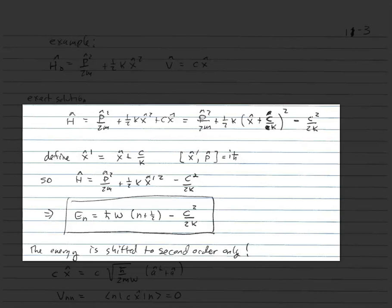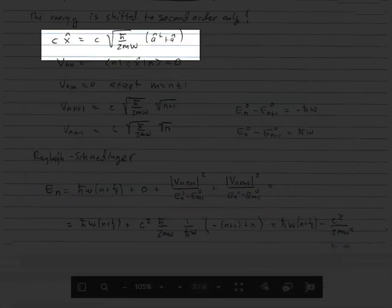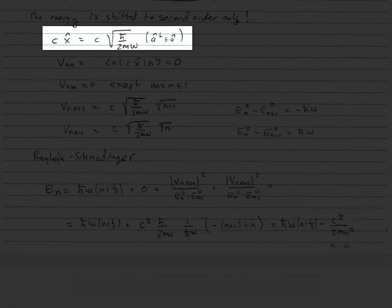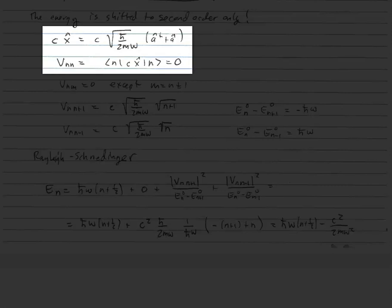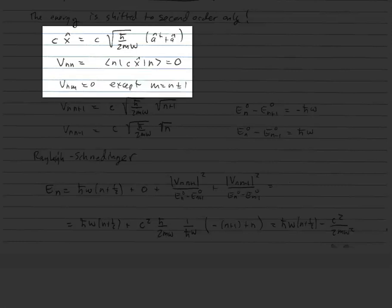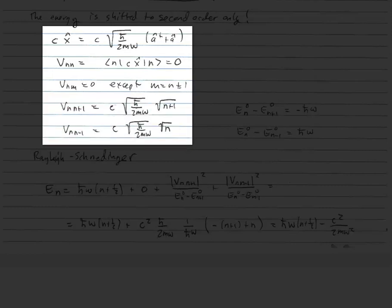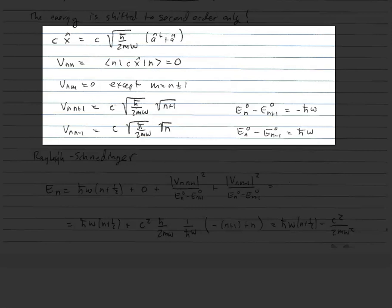We're going to work with this as a perturbation series. We write CX̂ = C√(ℏ/2Mω) (a† + a). Calculating VNN — the expectation value of CX̂ — because we have unbalanced a and a† operators, that expectation value equals 0. In fact, VNM = 0 except when M = N ± 1. The matrix elements are C√(ℏ/2Mω)·√(N+1) for the |N, N+1⟩ case, and C√(ℏ/2Mω)·√N for the |N, N−1⟩ case. The energy differences EN0 − EN+10 = −ℏω and EN0 − EN−10 = +ℏω.